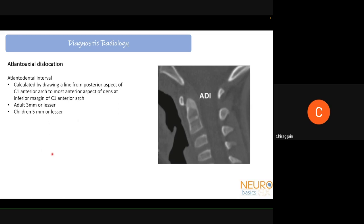CT imaging is the main tool for evaluating bony anomalies of the CV junction. For atlanto-axial dislocation, the key measurement is the atlanto-dental interval, calculated at the lower border of C1 — from the posterior aspect of the C1 anterior arch to the most anterior aspect of the dens at the level of the inferior margin of the C1 anterior arch. Normal values are 3 mm or less in adults and 5 mm or less in children.